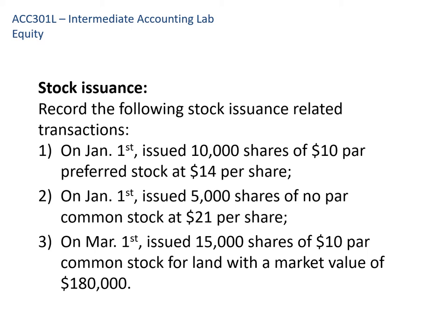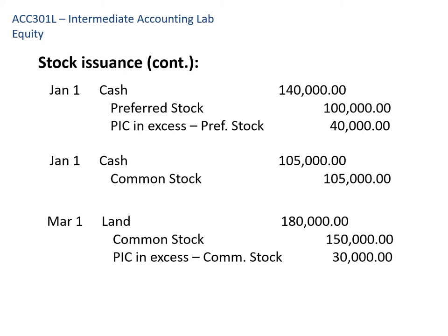In the first entry, we issue 10,000 shares of $10 par preferred stock at $14 per share, so we receive $140,000 in cash. We credit preferred stock for the par value of those shares — 10,000 shares at $10 equals $100,000. And the difference goes to paid in capital in excess of preferred stock. We track that separately from paid in capital in excess of common stock.